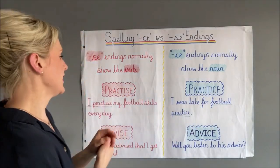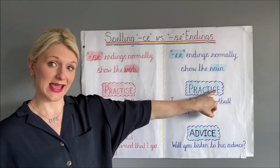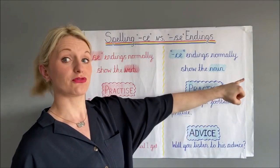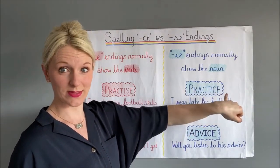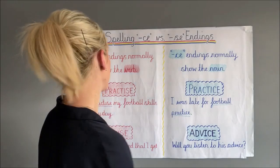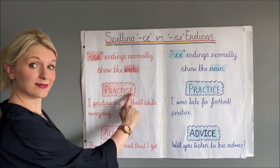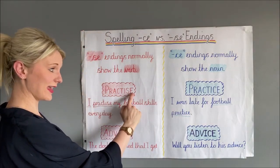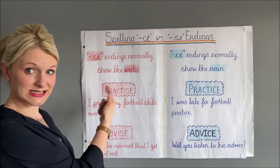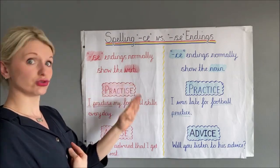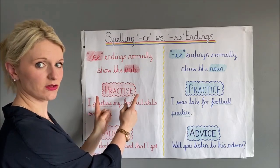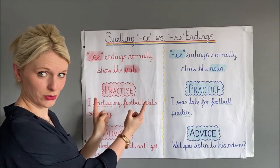Another big clue is that practice with a CE will only ever be practice spelt like this, or practices with an S on the end, like 'she missed lots of practices.' Practise with SE, however, could also have an ED ending, or you could drop the E and have an ING ending. So the verb form has a lot more forms that you might find.